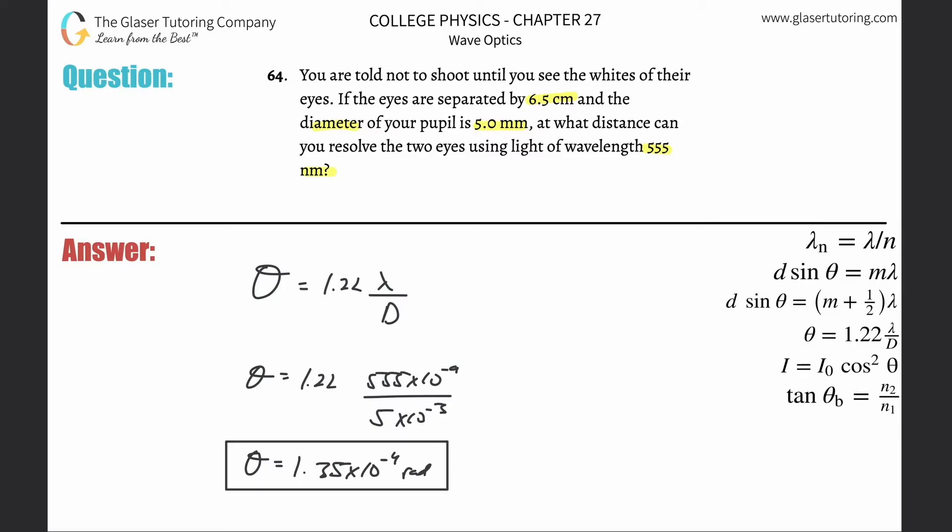Now after we know that, we can plug this into the arc length formula basically and solve for at what distance can you resolve the two eyes.